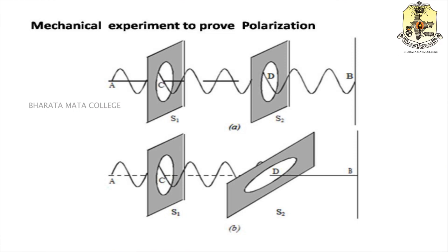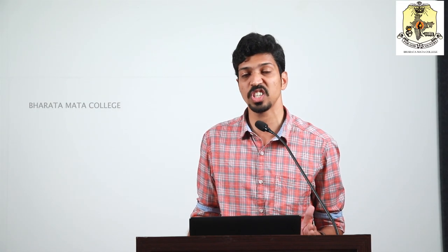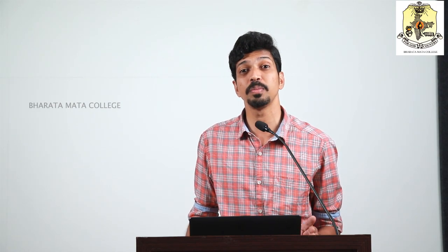At the free end A, if we move the string in an up-and-down manner, transverse vibrations occur in the string. These transverse vibrations pass through slit S1, reach slit S2, pass through it, and finally reach end B. These vibrations will pass only if the two slits S1 and S2 are parallel to the plane of vibration.